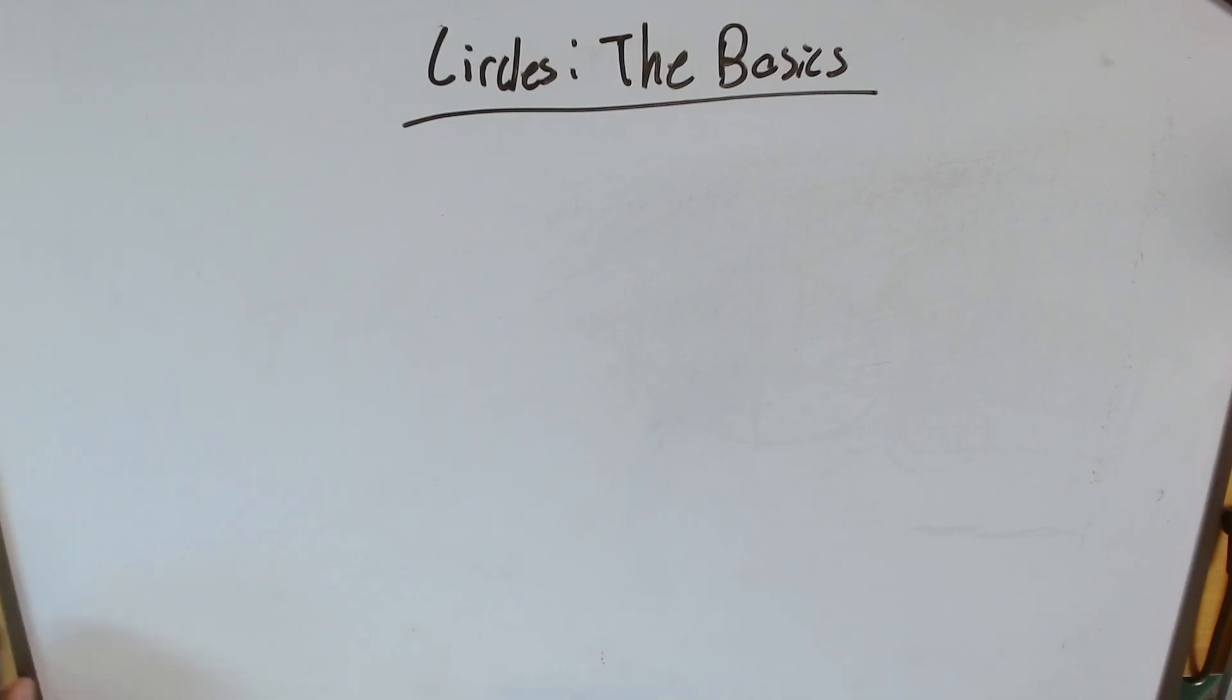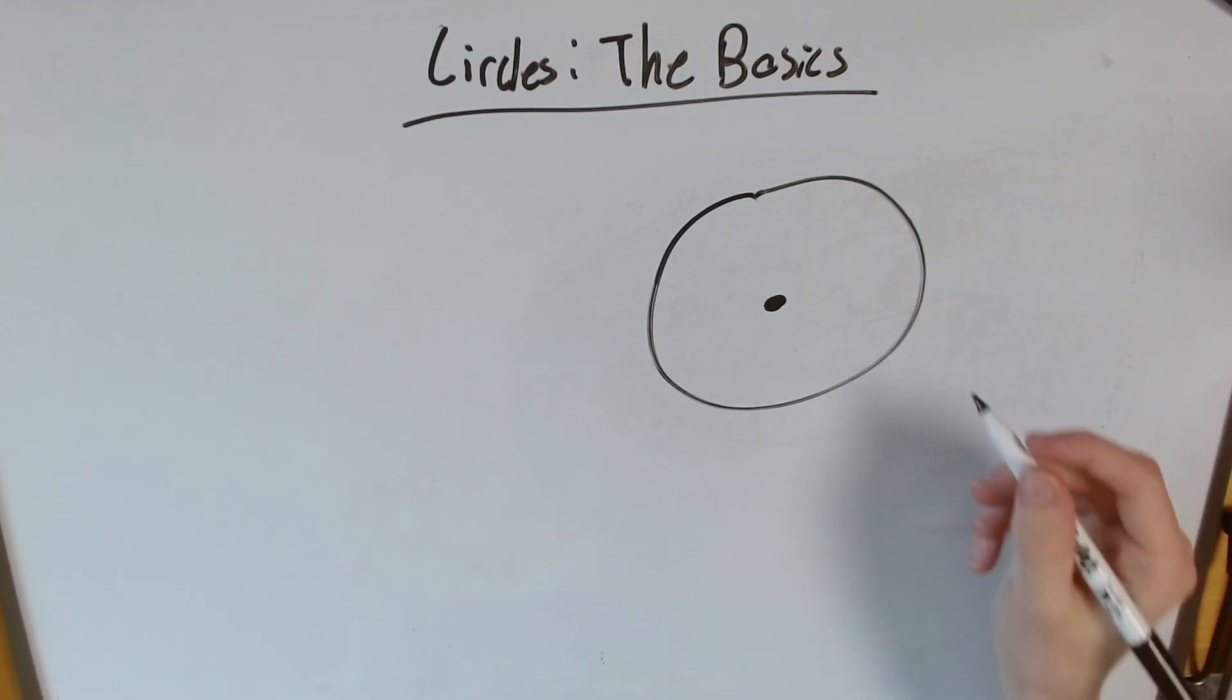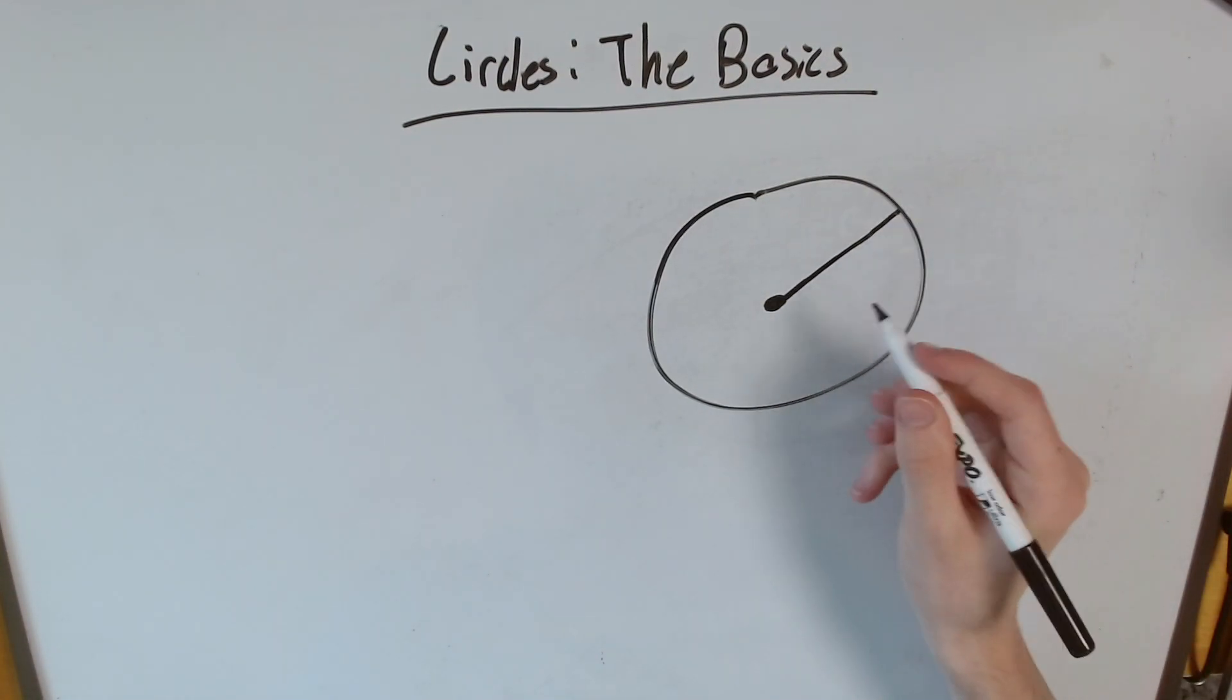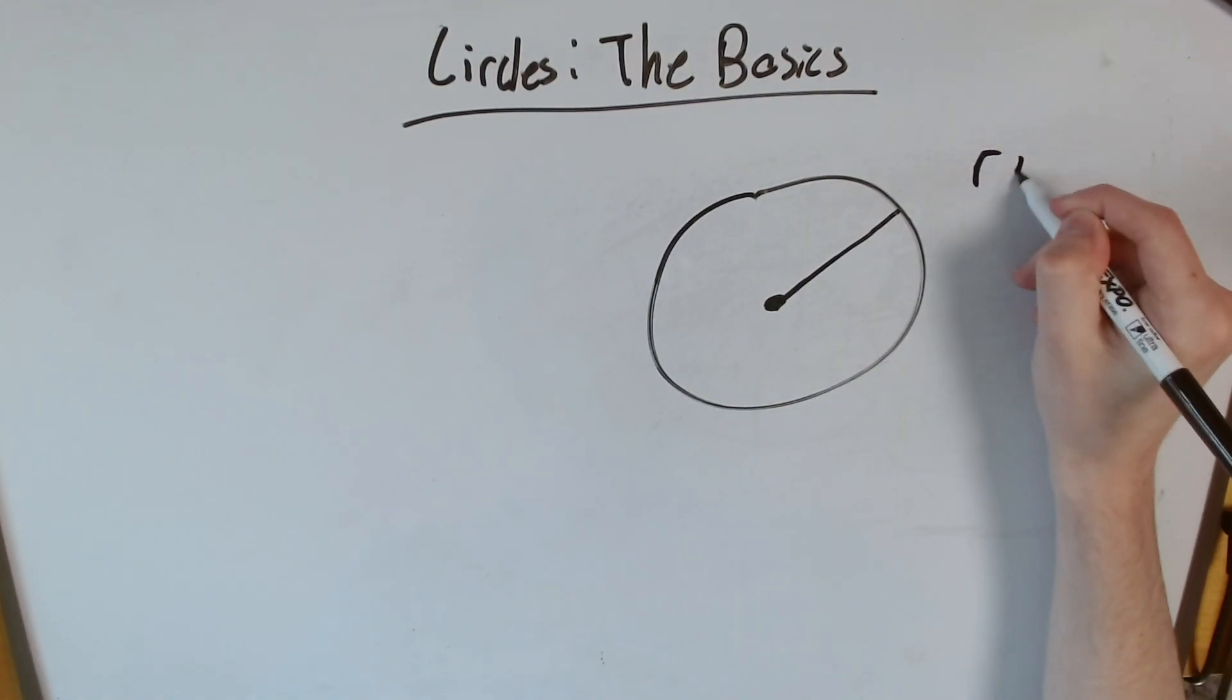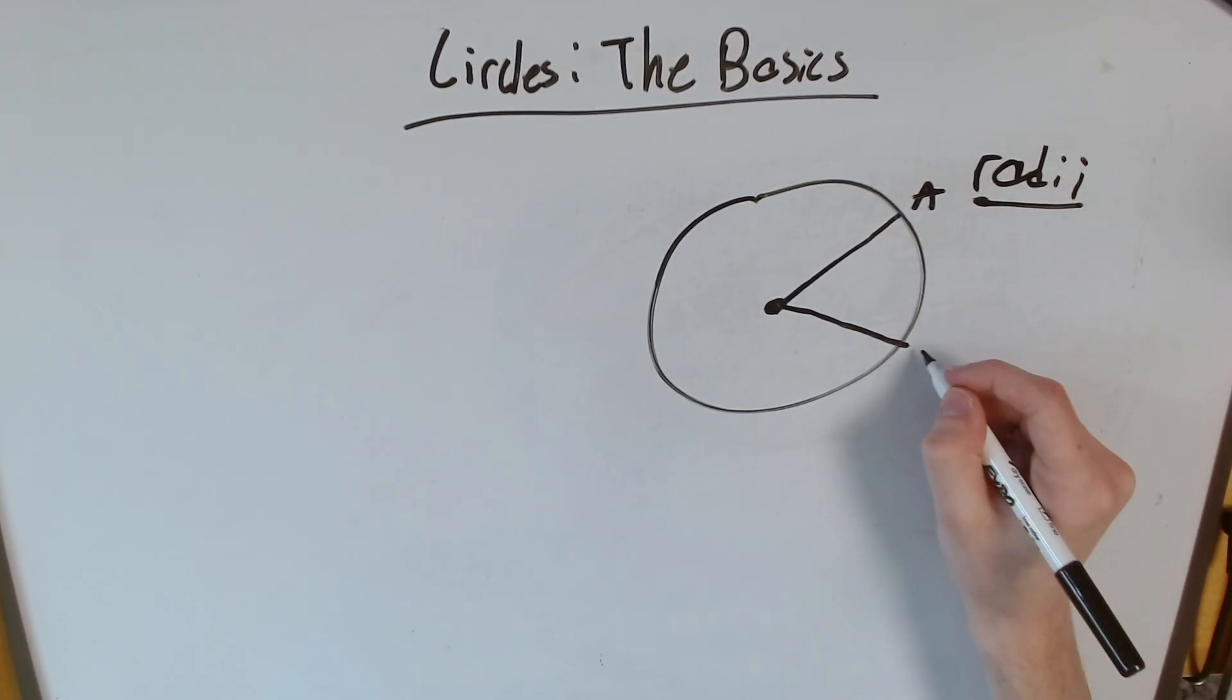Now, there's another fun thing about circles that's pretty important to what we've been learning about with angles, and that is what we call arcs. So what are arcs? Well, they're essentially angles in circles. I'll show you what I mean. Say this is our center, and I draw two radiuses, which we call radii—it's actually the plural form for radius.